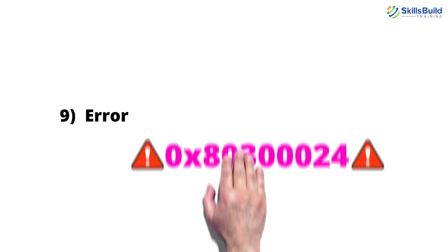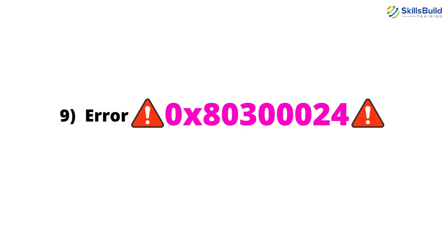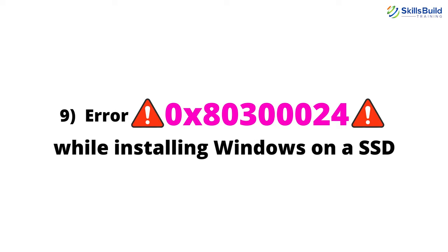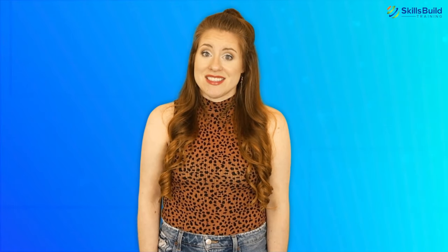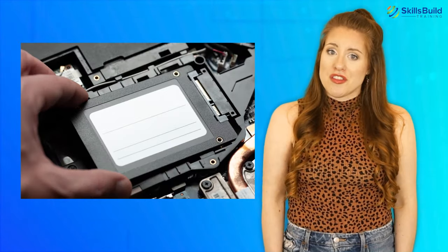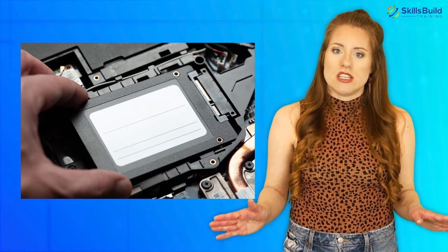Number 9: Error 0x803-00024 While Installing Windows on an SSD. A lot of people face this error when trying to install Windows on an SSD. Usually, this happens when you connect a new SSD to a motherboard which already has an HDD. To fix this problem, make sure to disconnect the HDD and leave the SSD attached. After installing Windows on the SSD, you can then re-attach the HDD.